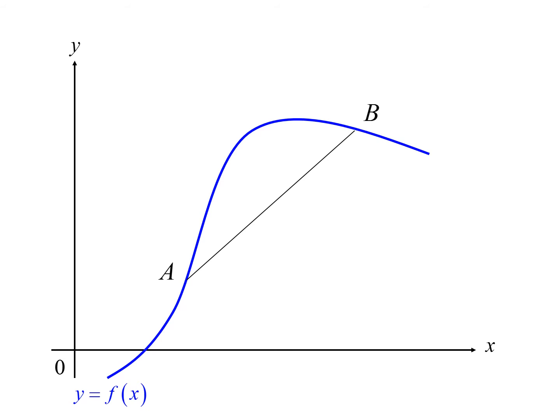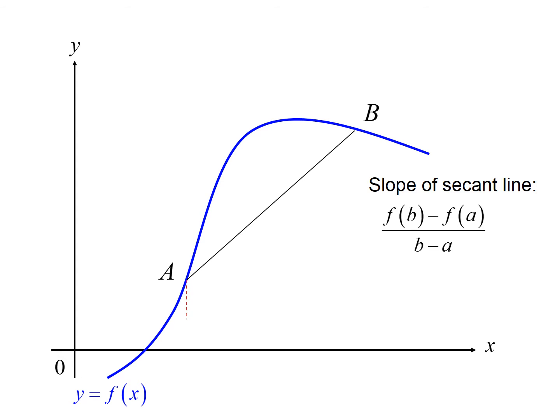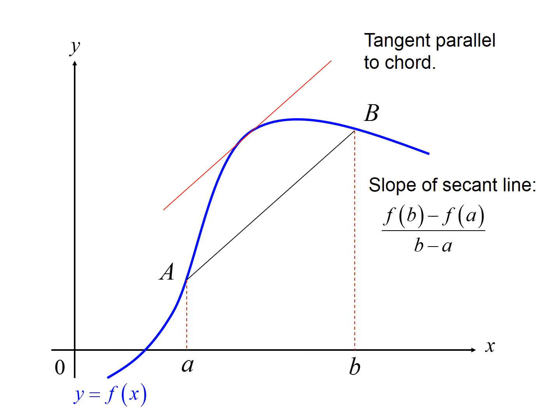Graphically, it looks like this: we have the average rate of change, which is the slope of the secant line, and we're saying someplace on this interval there has to be a tangent line parallel to that secant line.